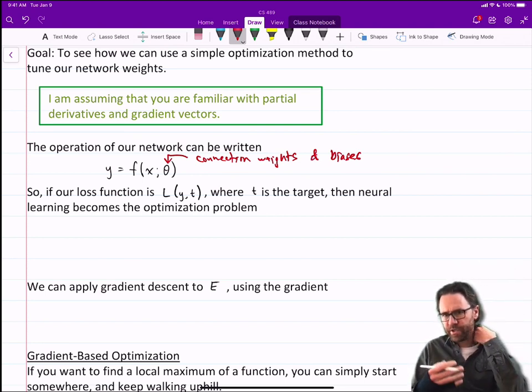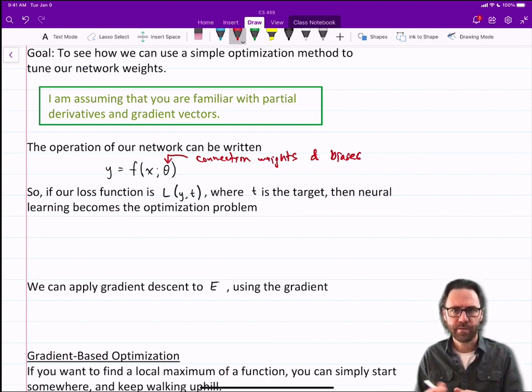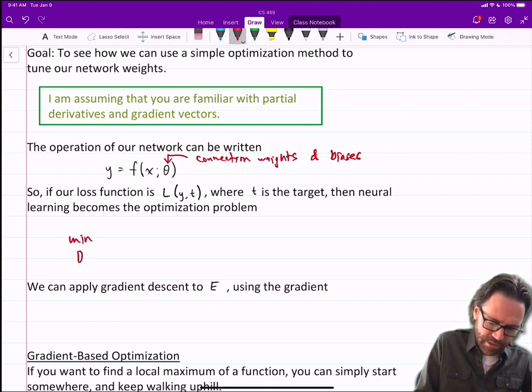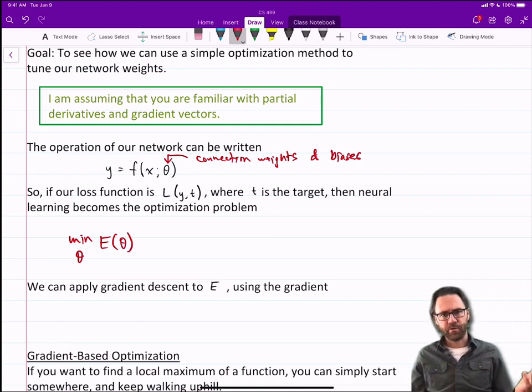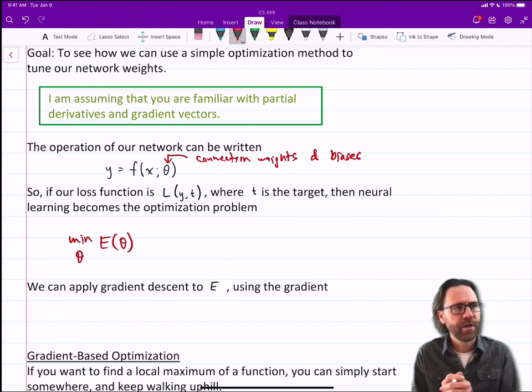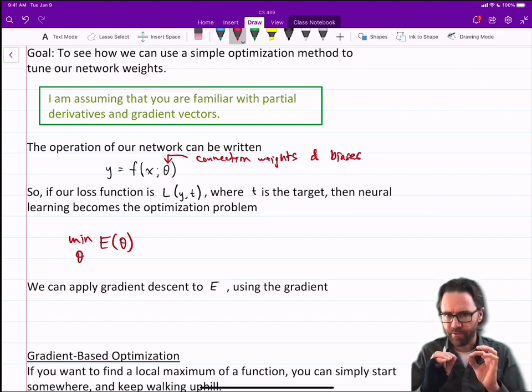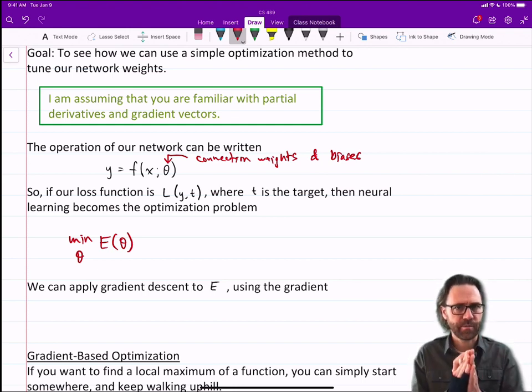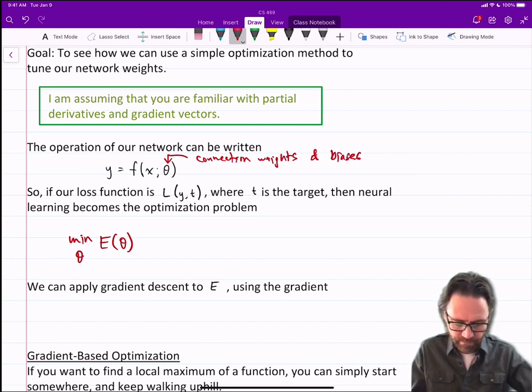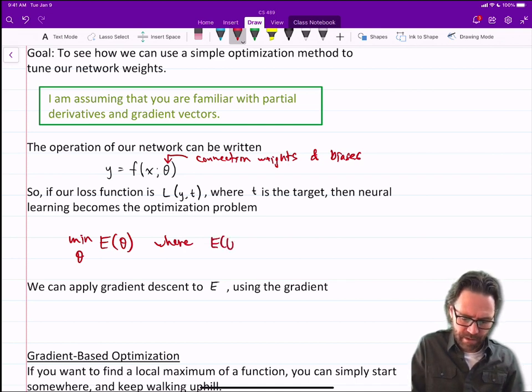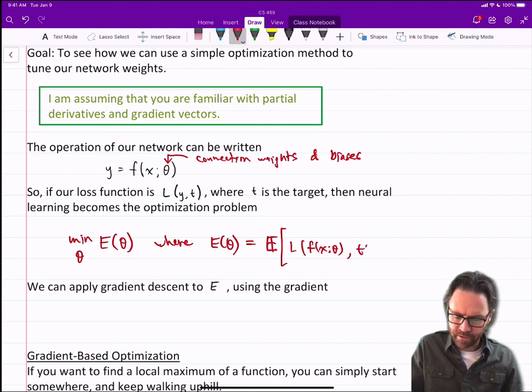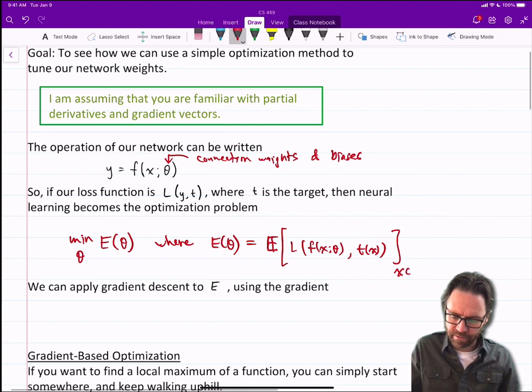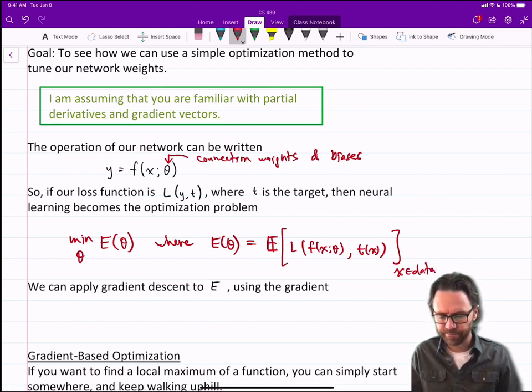So if our loss function is L of y, t, where t is the target, then neural learning becomes the optimization problem of minimizing with respect to all of our weights and biases, this error function or cost function. I'm just writing it as a function of theta. Of course, it'll depend on the data set as well. But for the purposes of this lecture, I'm just going to ignore all those things and really just talk about how it's a function of our connection weights and biases. And recall that E of theta is the expected value of our loss and our target over all of our data points.